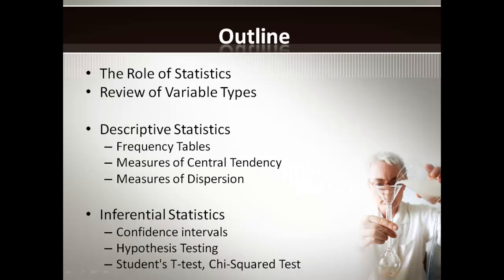The outline of this talk is as follows. I'll be discussing the role of statistics and its limitations, then a brief overview of different variable types, and then move on to discuss descriptive statistics including frequency tables, measures of central tendency, and measures of dispersion. The next topic will be inferential statistics including confidence intervals, hypothesis testing, and two commonly used statistical tests: the Student's t-test and the chi-square test.